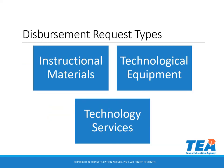There are three disbursement request types: instructional materials, technological equipment, and technology services. On the EMAT training page of the TEA website, there are detailed trainings for each disbursement type. Information about what goes in each type can be found on the Technology and Instructional Materials Allotment page of the TEA website on the top of the main Instructional Materials webpage.